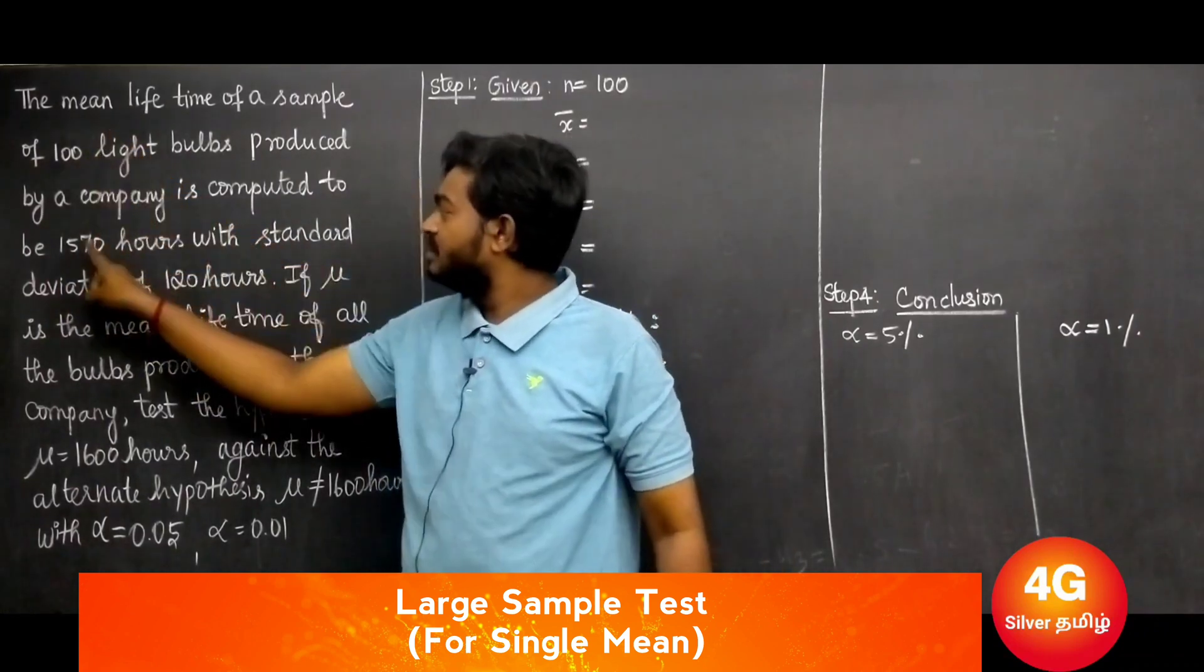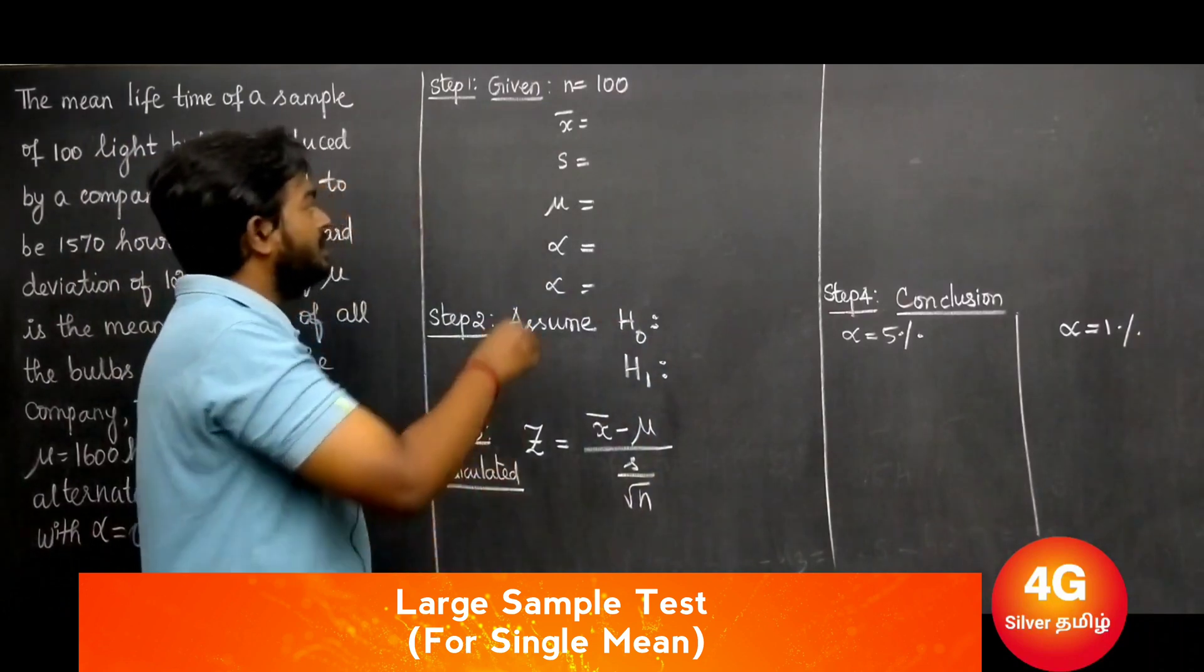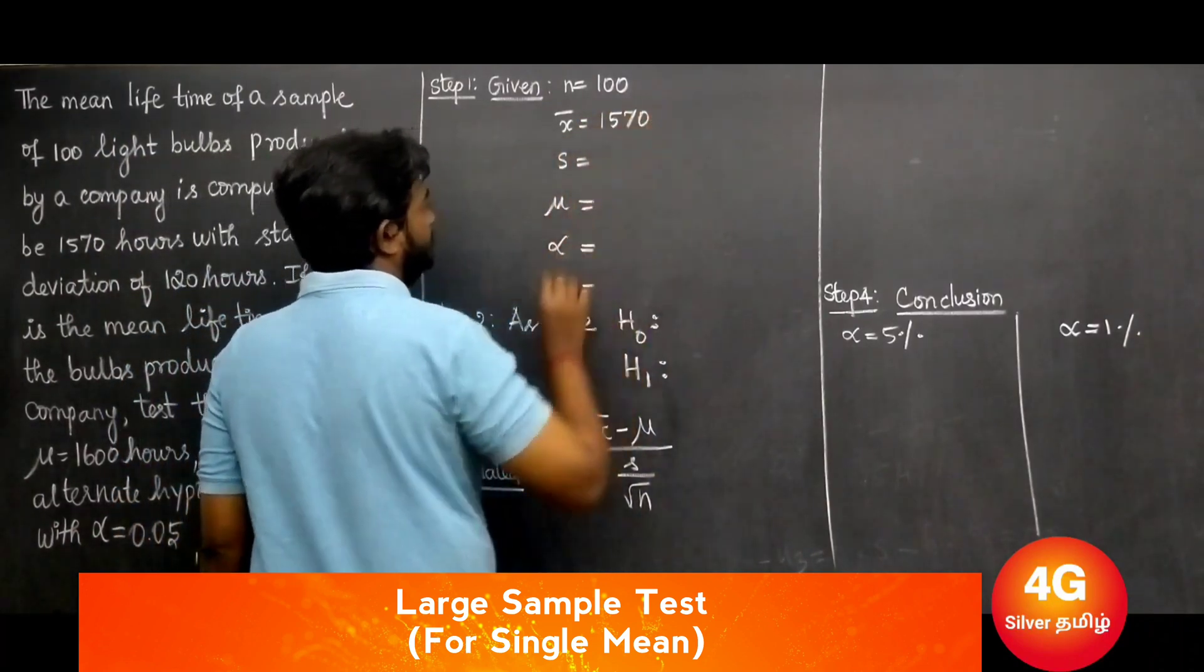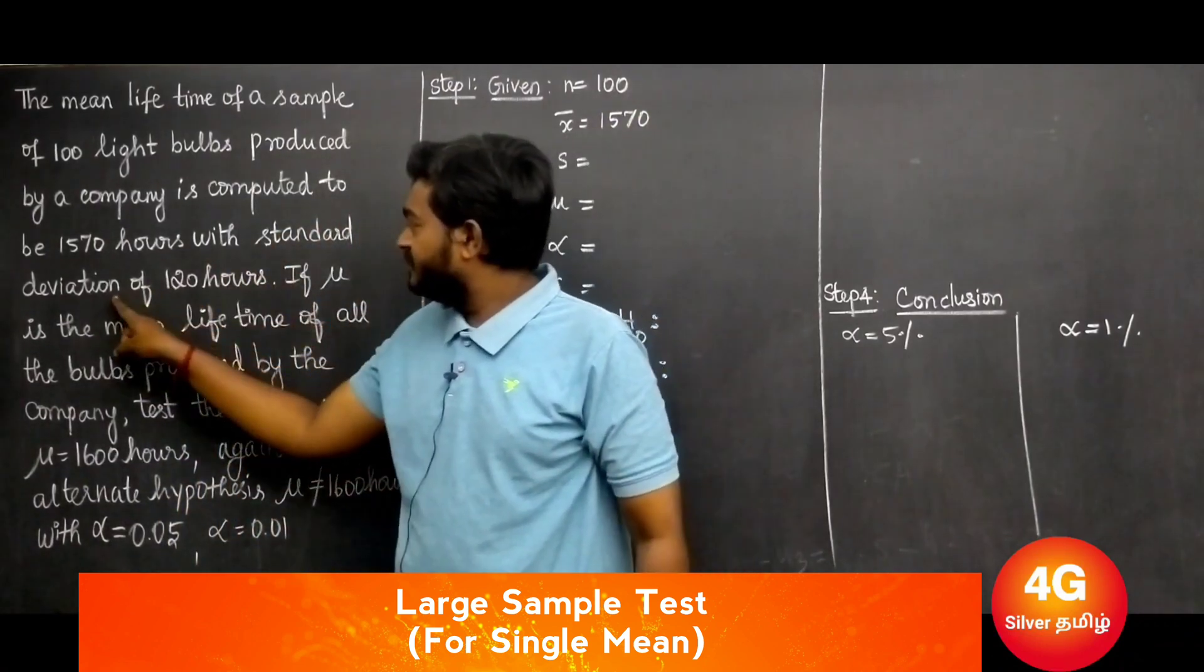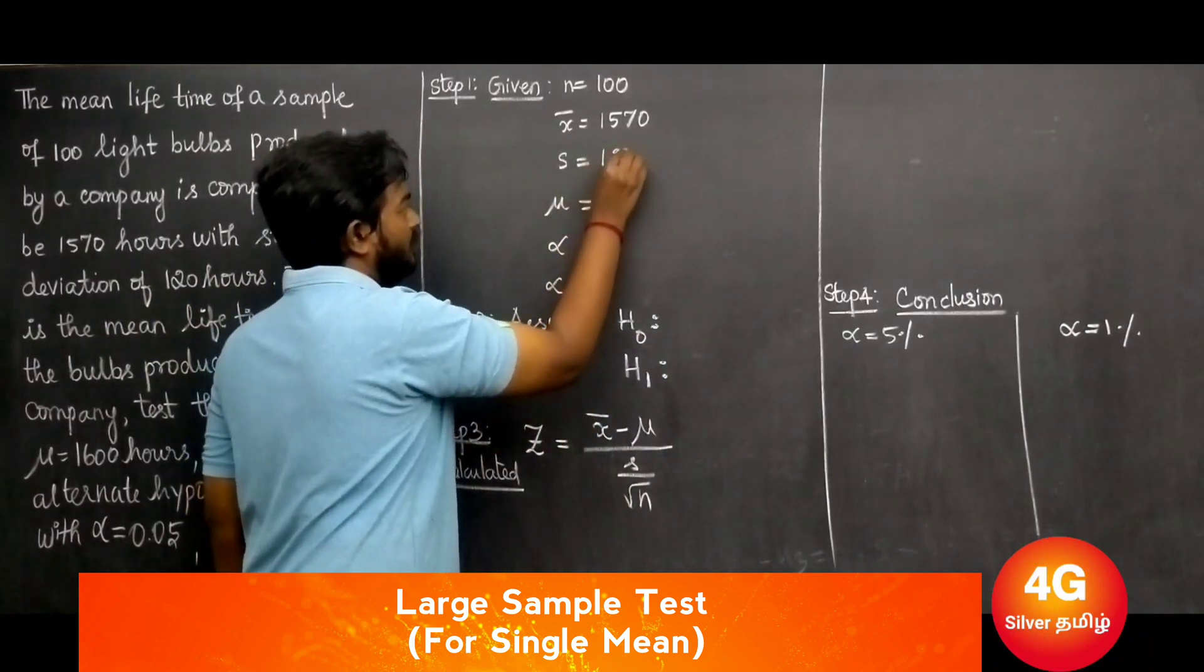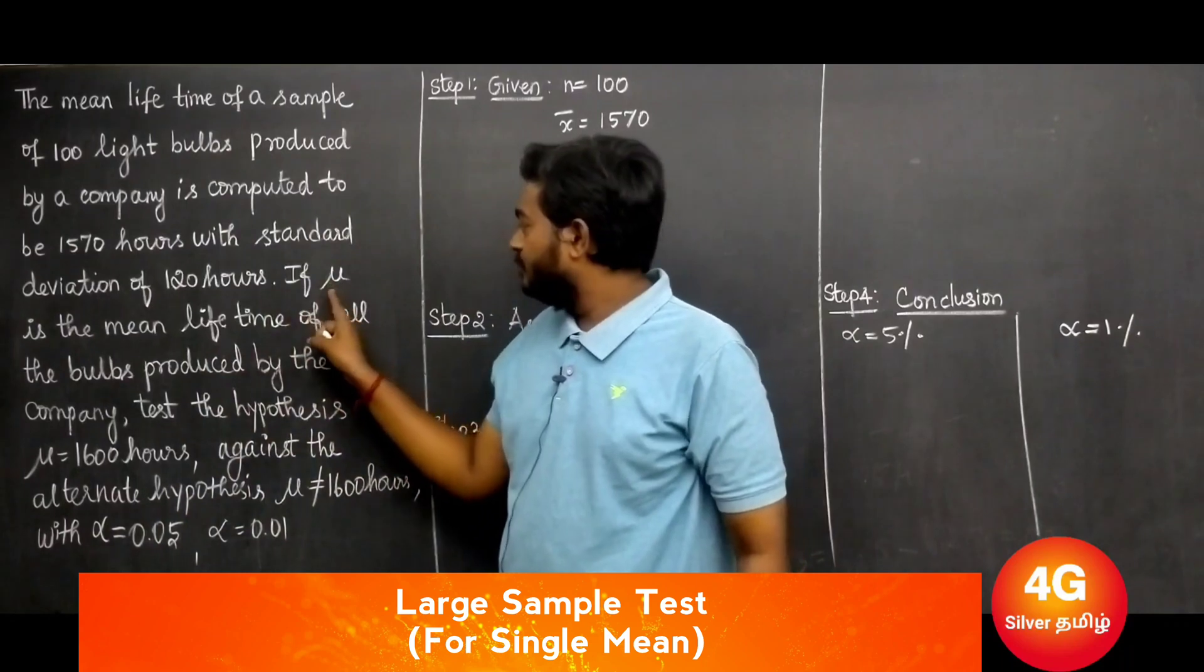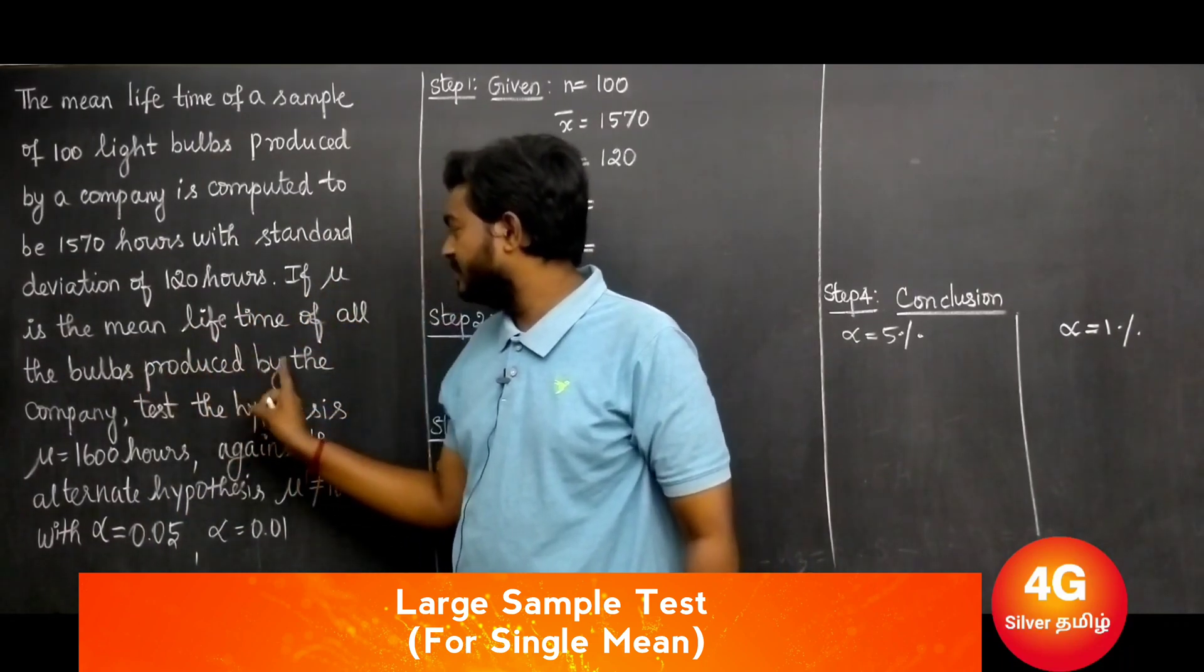The mean x̄ equals 1570 with standard deviation of 120 hours, so s equals 120. If μ is the mean lifetime of all the bulbs produced by the company.